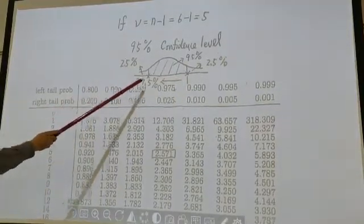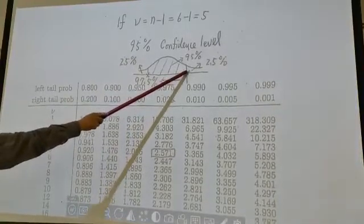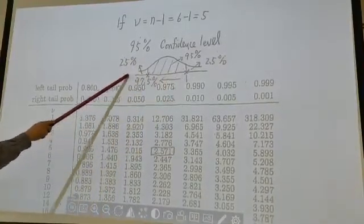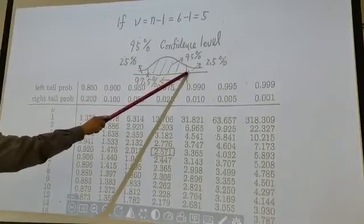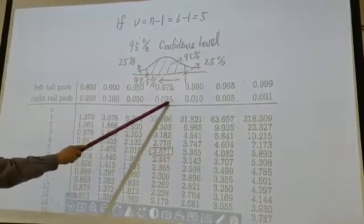This one should have what? 0.975 area. I always say 97.5% area. And this point to what? To its right. The right tail is only what? 2.5%. Are you with me?